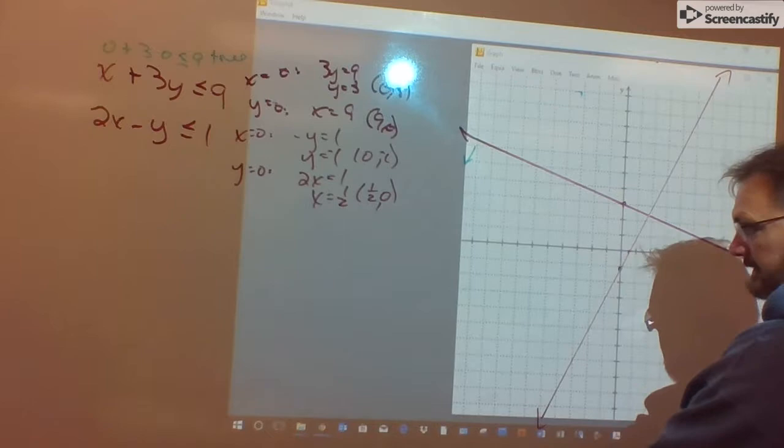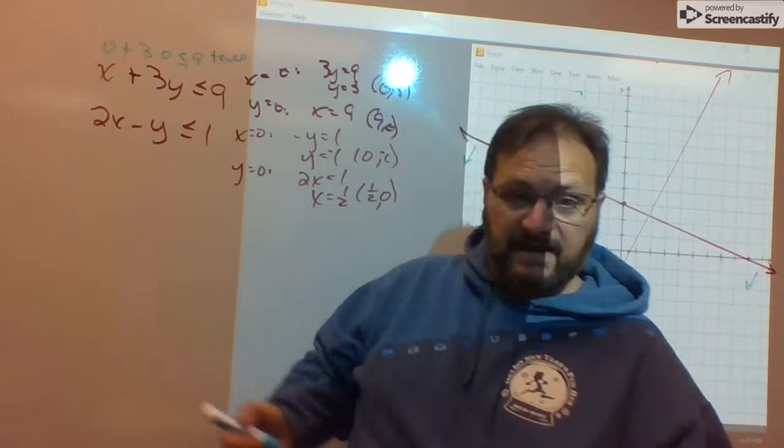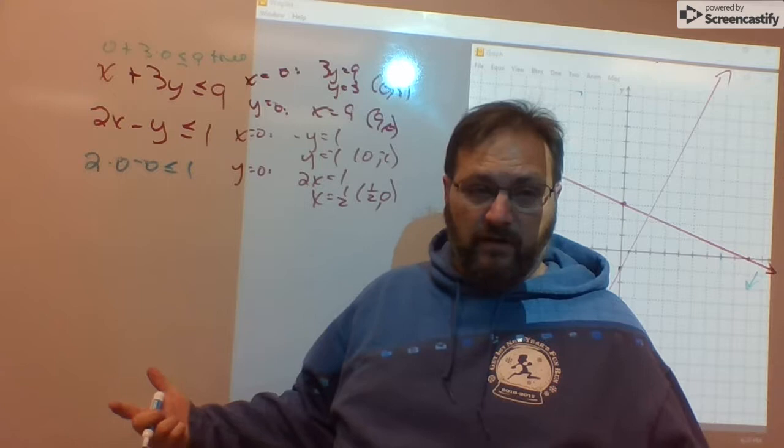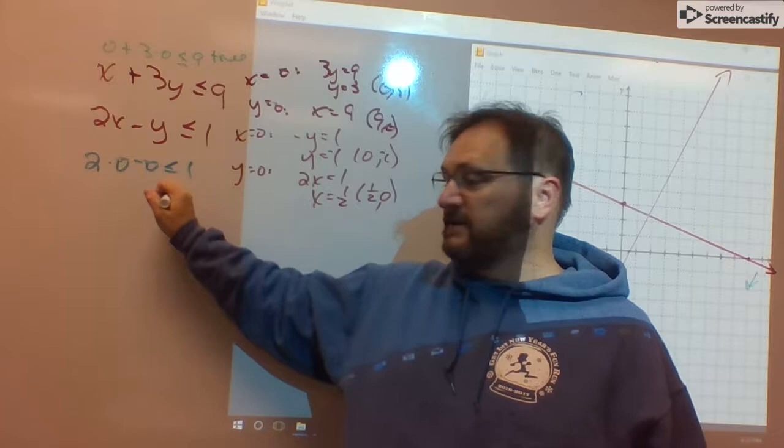And I need to test the point. If I test 0, 0, 2 times 0 minus 0 is less than or equal to 1. True or false? The left side is 0. 0 is less than or equal to 1. That's true as well.